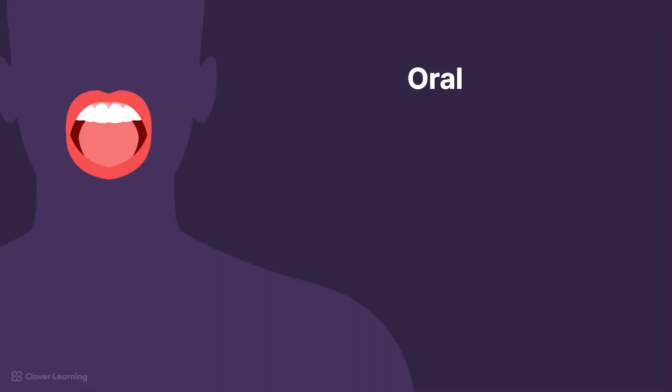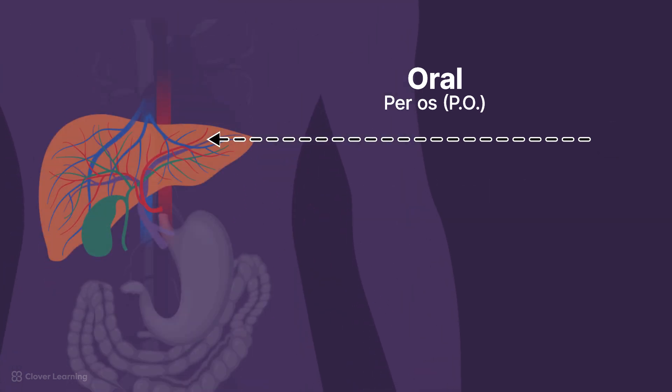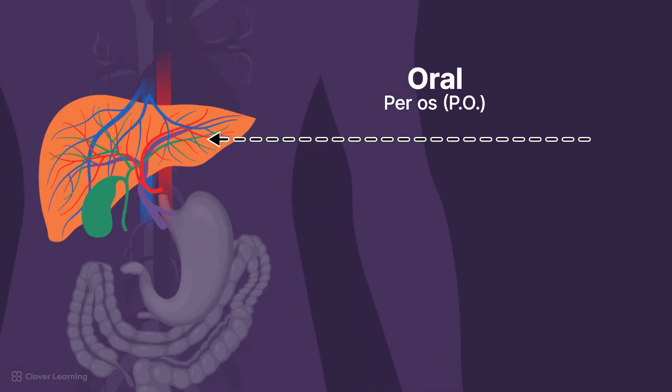Oral administration, known medically as per-os, P.O., involves the ingestion of medication through the mouth. It is the most common, convenient, and usually the safest technique of drug administration. The medication is swallowed or chewed, then passes through the gastrointestinal tract. The oral route provides the safest way to administer medications, although it is the slowest way for the drug to reach its intended site.